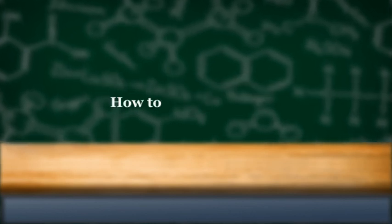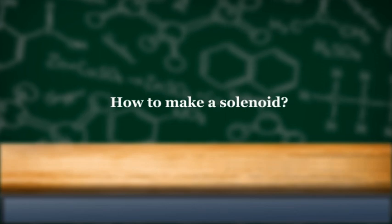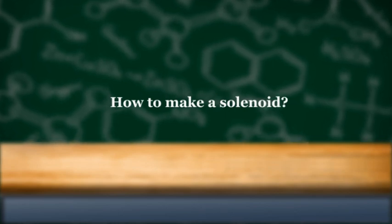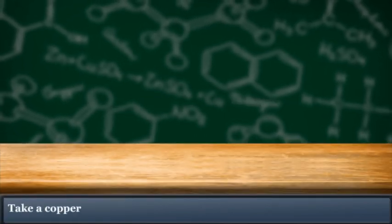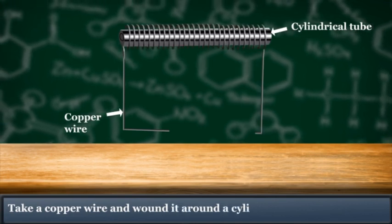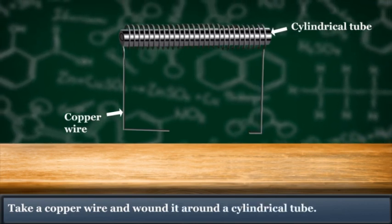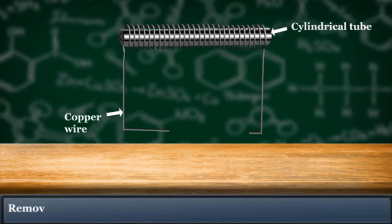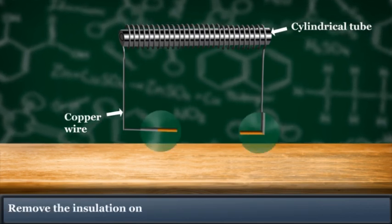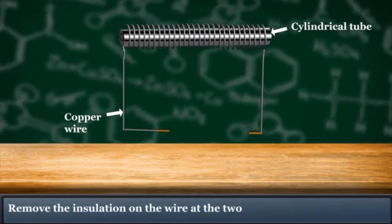How to make a solenoid? Take a copper wire and wind it around a cylindrical tube. Remove the insulation of the wire at the two ends.